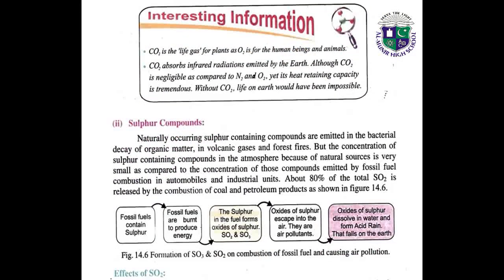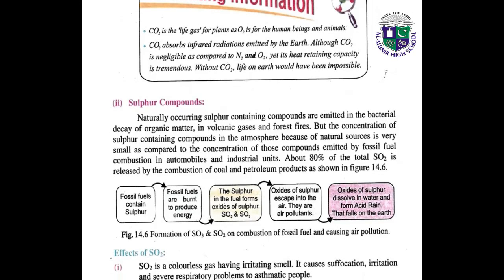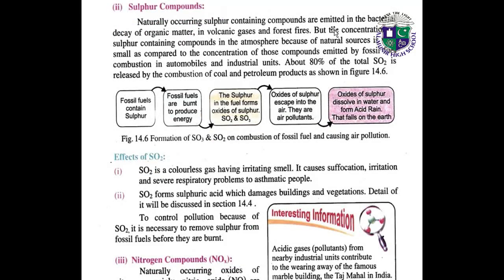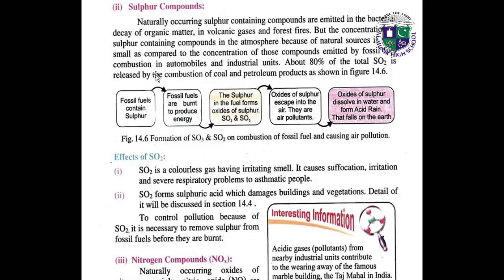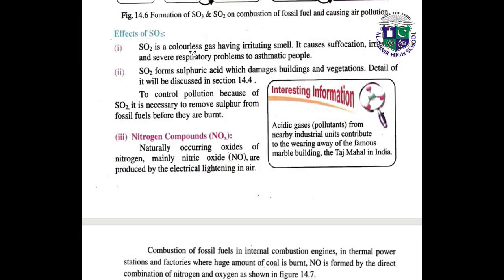Interesting information: carbon dioxide is a vital gas for plants. Carbon dioxide absorbs infrared radiations emitted by the earth, although CO2 is negligible in concentration compared to N2 and O2. Regarding sulfur compounds: naturally occurring sulfur-containing compounds are emitted in bacterial decay of organic matter, volcanic gases, and forest fires, but their concentration from natural sources is very small compared to those emitted by fossil fuel combustion in automobiles and industrial units. About 80% of total SO2 is released by the combustion of coal and petroleum, as represented by a flow chart. Effects of SO2: it is a colorless gas with an irritating smell. It creates suffocation, irritation, and severe respiratory problems. SO2 forms sulfuric acid, which damages buildings and vegetation.